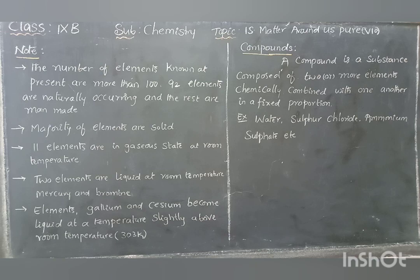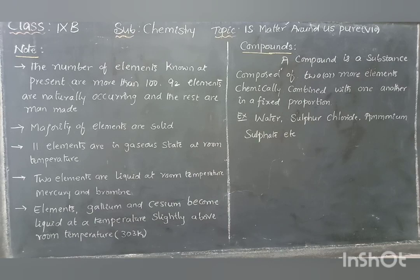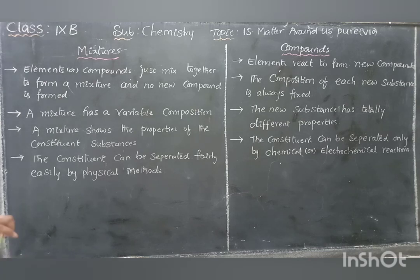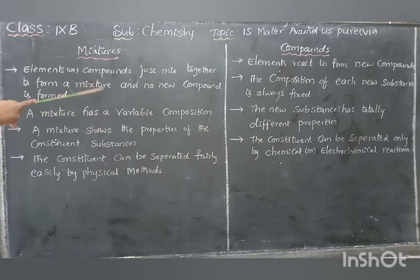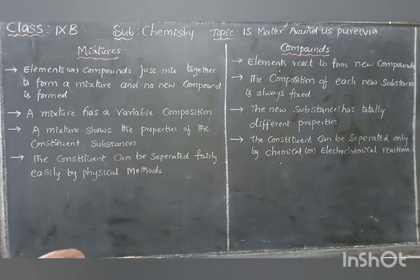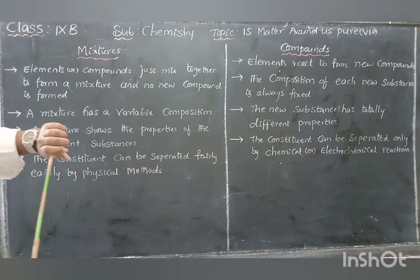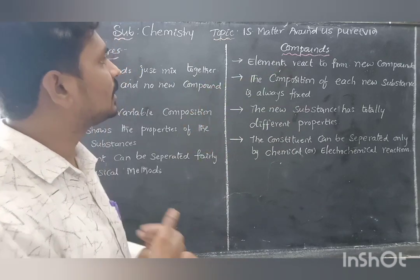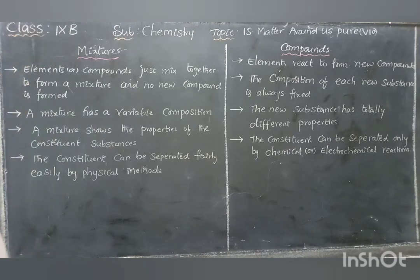We will now distinguish the difference between mixtures and compounds. In the case of a mixture, elements or compounds simply mix together — no new compound is formed. The original properties of the initial substances are retained. But in the case of compounds, elements react chemically to form a new compound through a chemical reaction, and a new substance with new properties is formed.